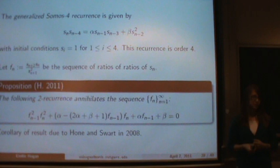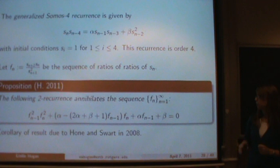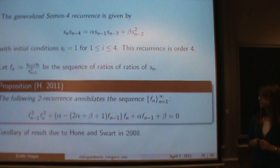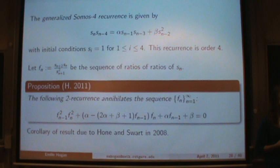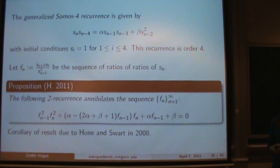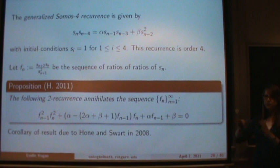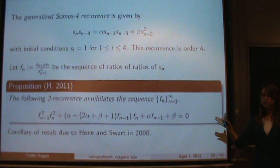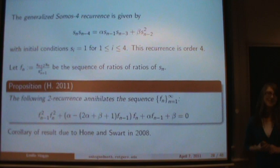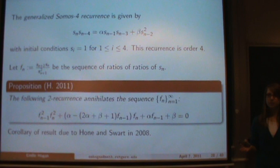I'm not going to prove this to you, but just take on faith that this 2-recurrence does annihilate our sequence of ratios of ratios of SOMOS 4. If you look at the recurrence and reorder it a little, you get an order-2, 2-recurrence; this is an order-1, 2-recurrence, so you find another recurrence, solve both for F_{n+2}, and set them equal. So we're producing now an infinite number of sequences, and I want to show you how I think about those.